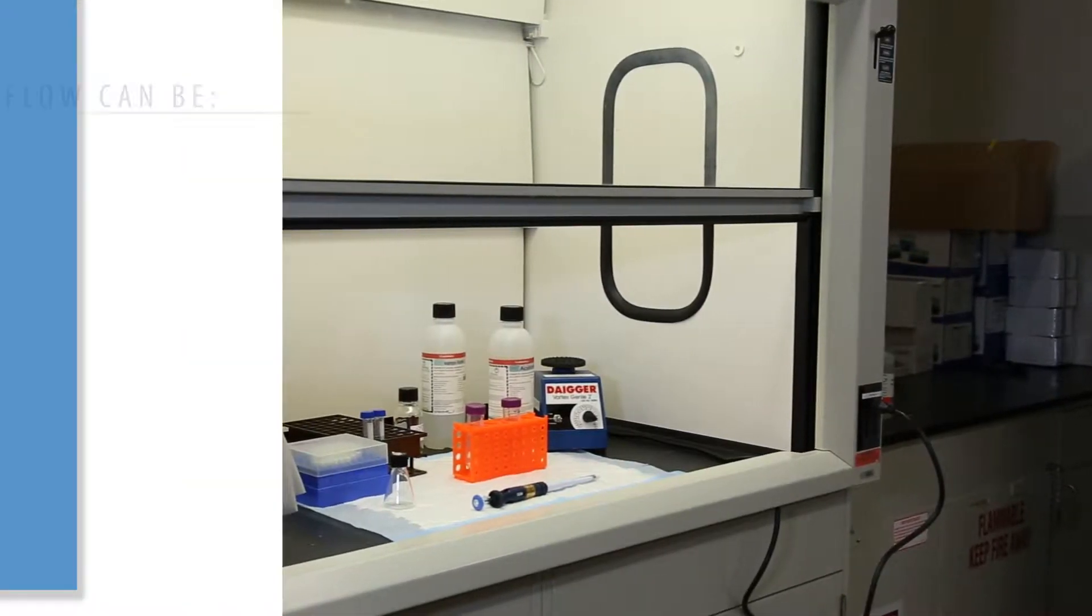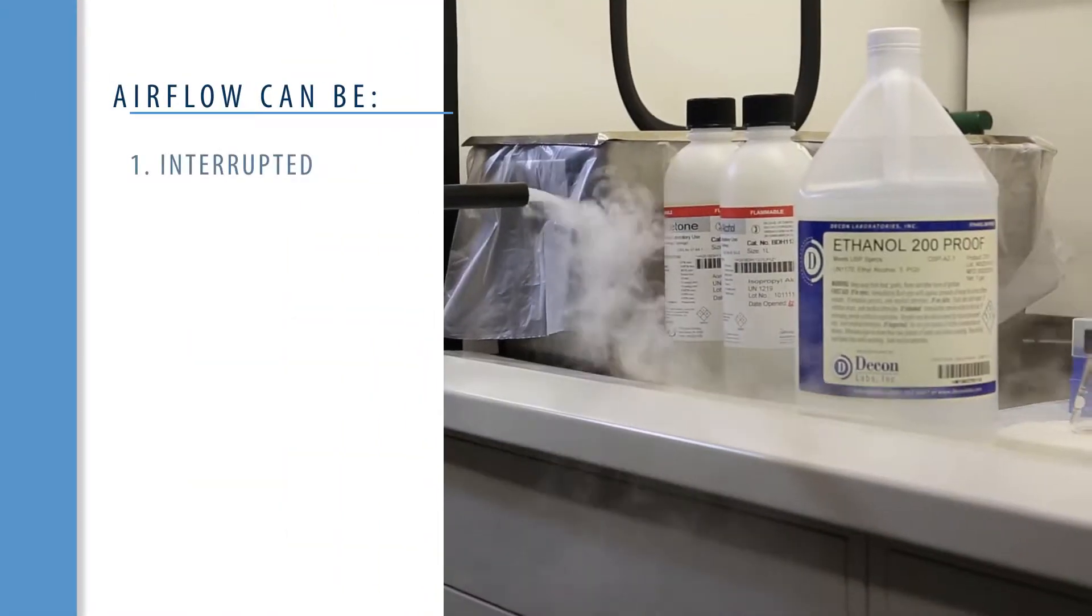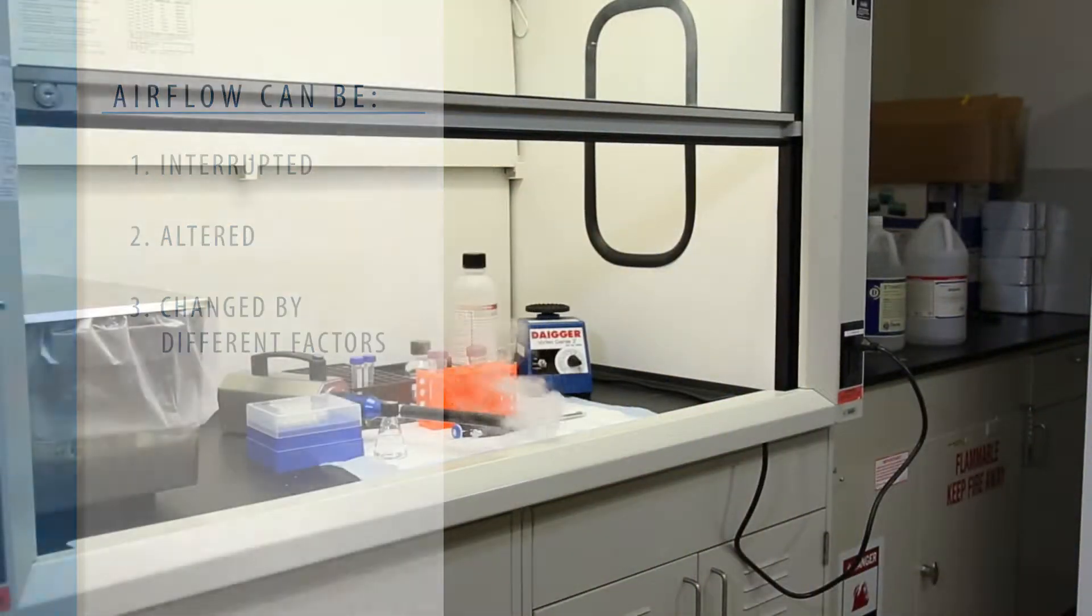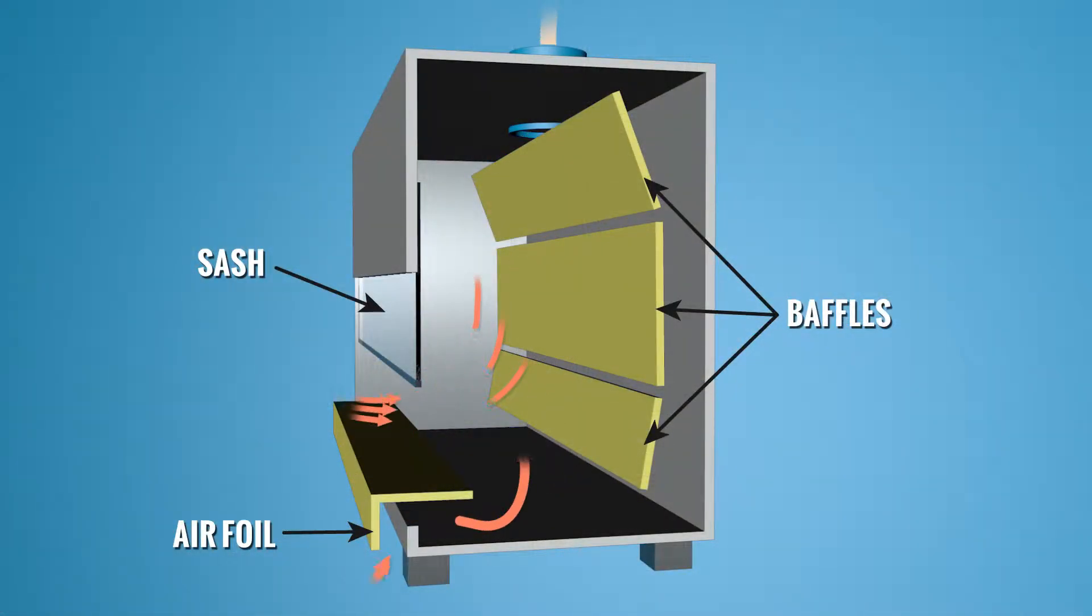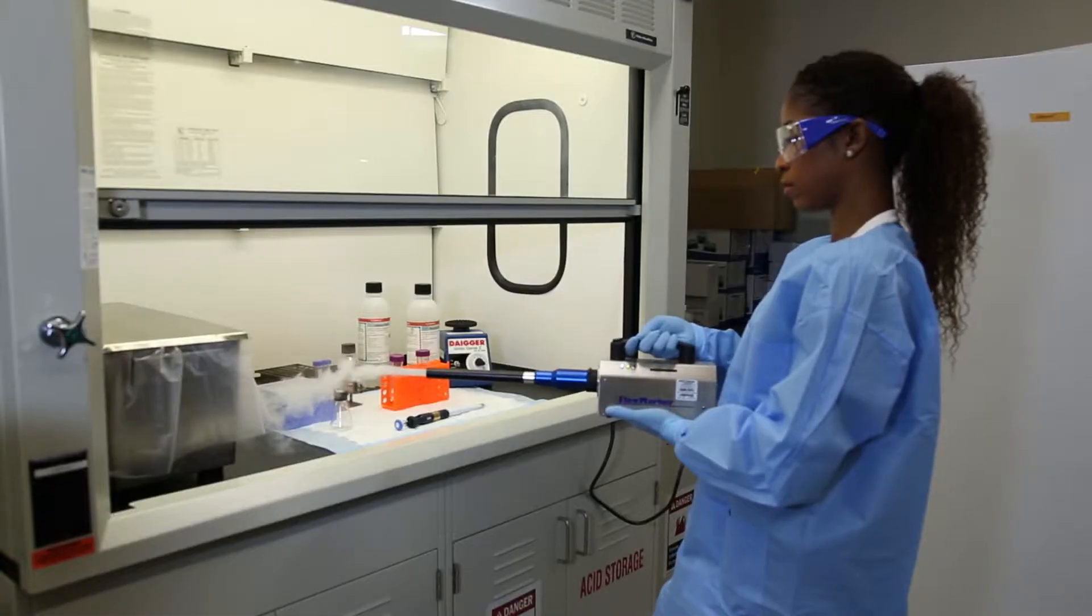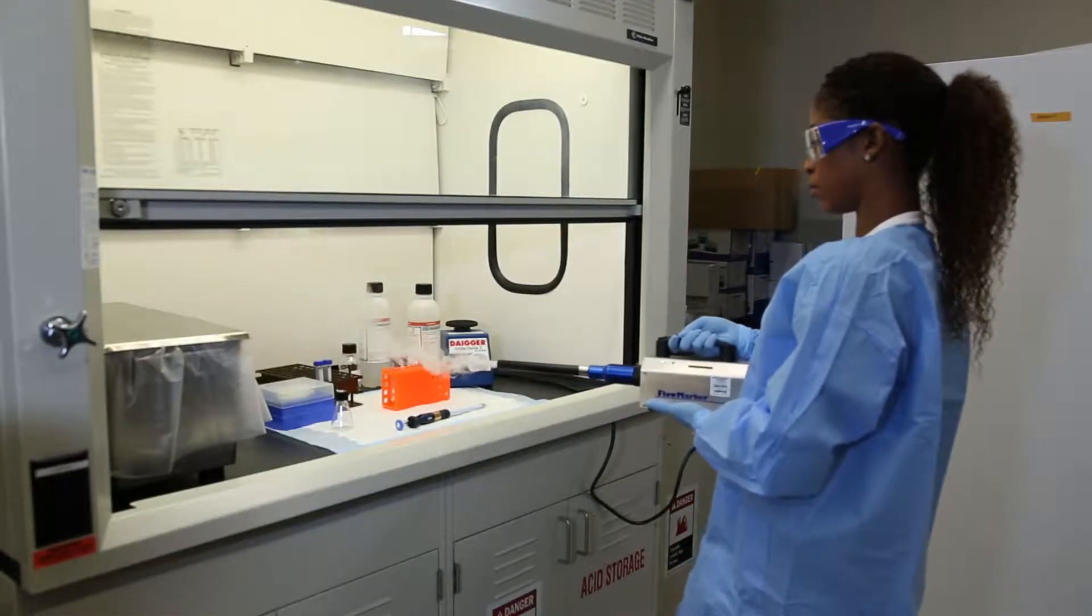Air flow in a chemical fume hood can be interrupted, altered, and changed by different factors. Air flows into the hood capturing and containing contaminants, preventing them from escaping into the laboratory room. The smoke shown here provides visual demonstration of how air flows in a fume hood.